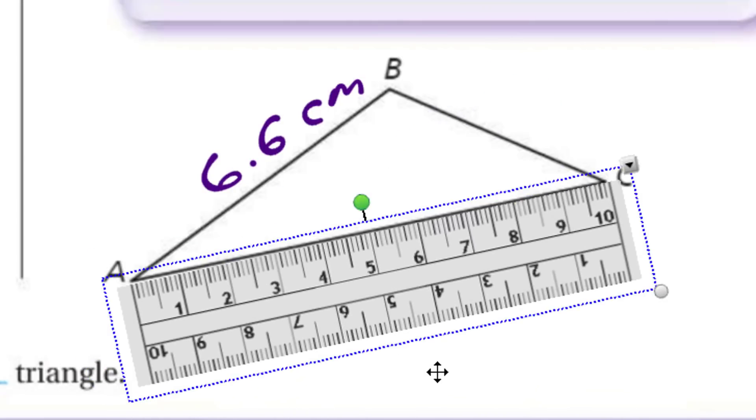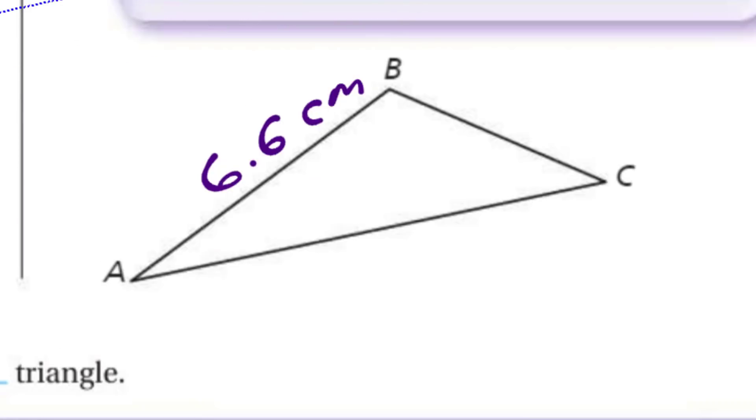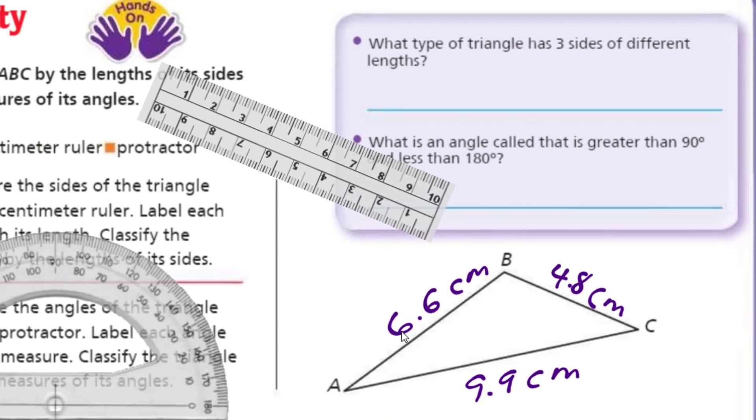Now let me go ahead and measure this one. That one went right to the end there. Looks like 10 centimeters. But it's actually, it looks like it stops right before, like a 9.9. So we'll go for the 9.9. Now I'll do my last one. And I got a 4.8. So what type of triangle has three sides of different lengths? That's what I have here. And you know what that guy is? It's a scalene triangle.